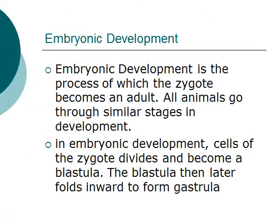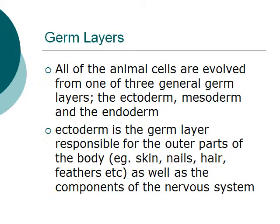Let's start off with embryonic development. Embryonic development is the process by which the zygote becomes an adult. All animals go through similar stages in development. Cells of the zygote divide and become a blastula. The blastula then folds inward to form a gastrula. In all animal cells, they evolved from one of three general germ layers: the ectoderm, the mesoderm, and the endoderm.